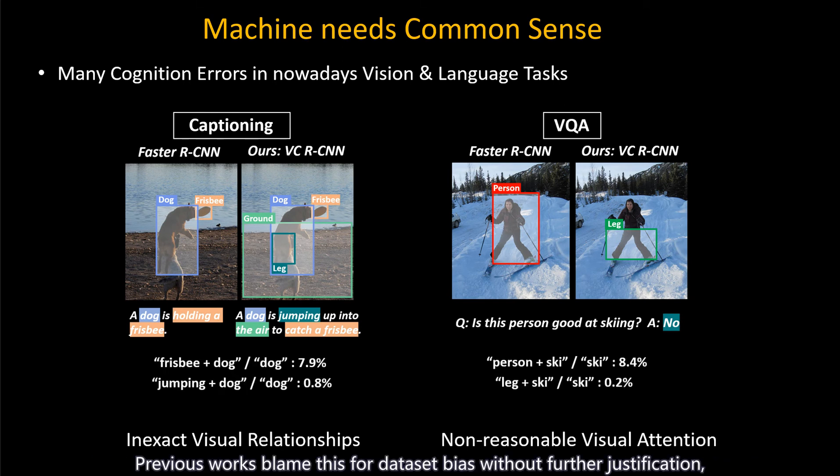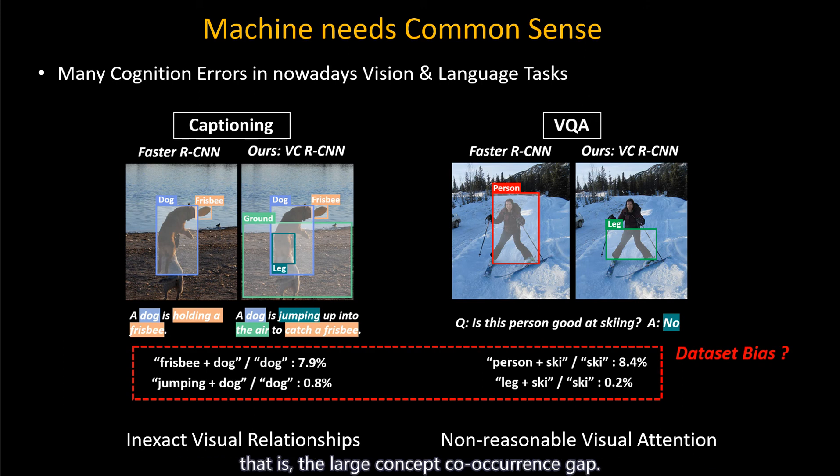Previous works blame this for dataset bias without further justification, i.e., the large concept co-occurrence gap. However, actually we cannot blame the dataset bias.